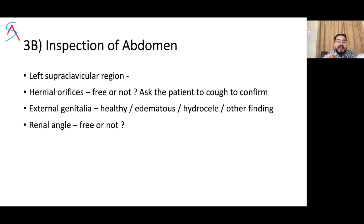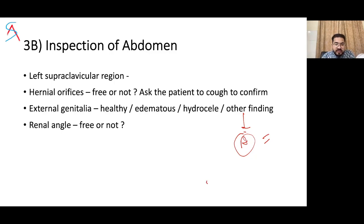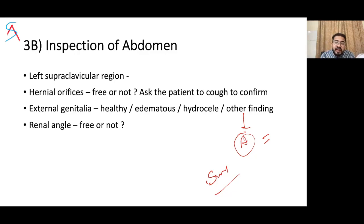Examine external genitalia — testicular atrophy in males can be seen in liver cell failure. Testicular swelling may be due to tumor, hydrocele, or hernia primarily, or secondary causes like leukemia or CLL. Comment on whether the renal angle is free or not. Then for measurement, use a measuring tape in centimeters to measure abdominal girth at the umbilicus level — this is a prognostic marker in acute abdomen.